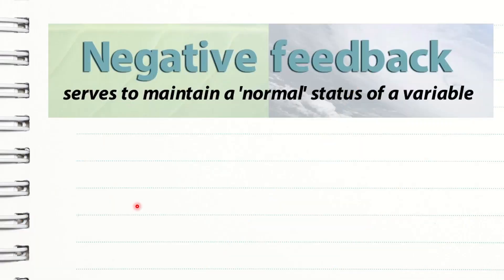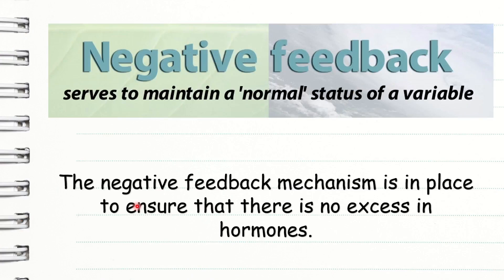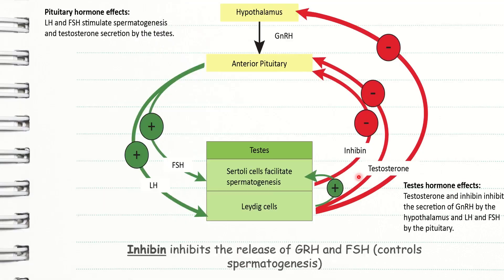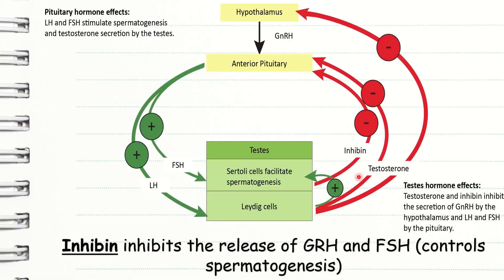The negative feedback mechanism is in place to ensure that there is no excess in hormones. The Sertoli cells produce a hormone called inhibin, which inhibits the release of GRH and FSH. Inhibin is released into the blood when the sperm count is too high. And if sperm cell numbers are not enough, inhibin is not released.